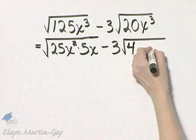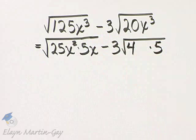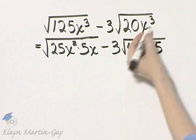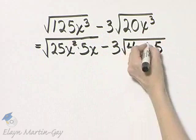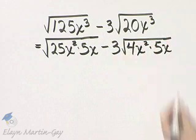20 is 4 times 5, and 4 is a perfect square. What about x cubed? x cubed is x squared times x.